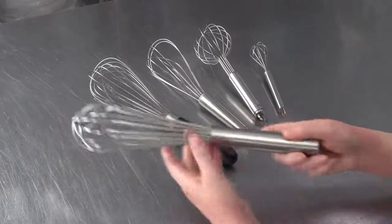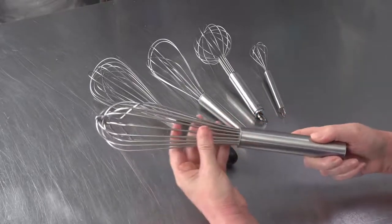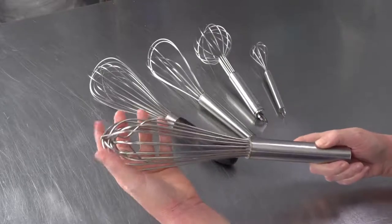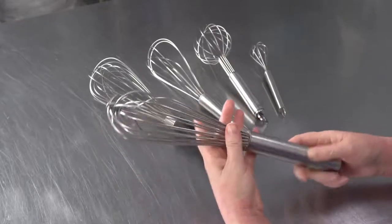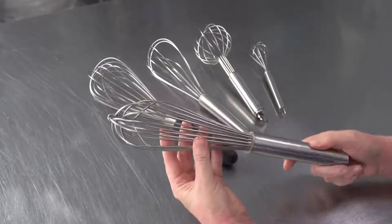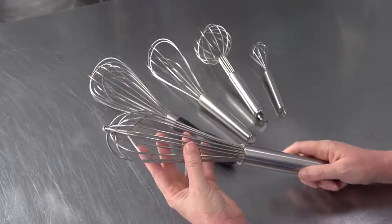In general, we're looking for something that has a nice heavier gauge wire and a nice round opening at the end. That's going to help give us the volume and lift we want, and it'll stand up to the jobs.